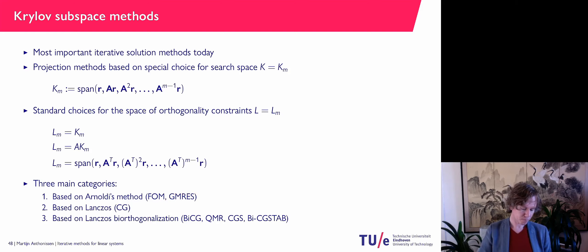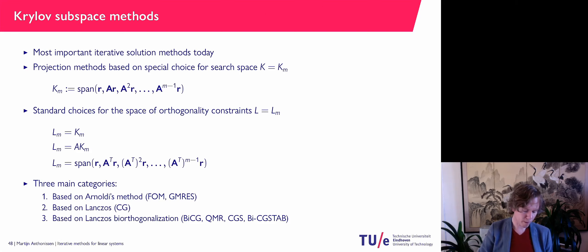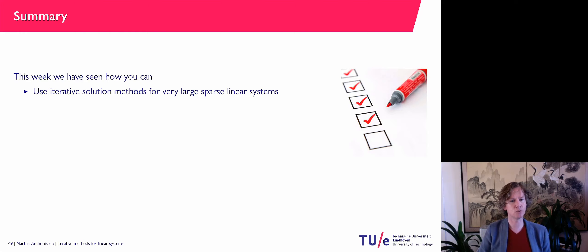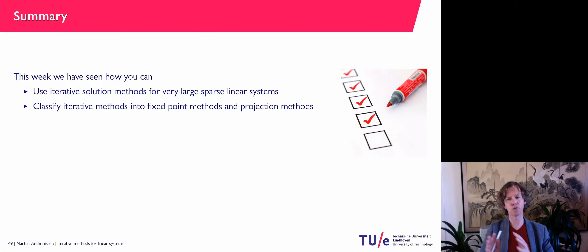Bi-CGSTAB was proposed by the famous Dutch numerical mathematician Henk van der Vorst. To wrap up our discussion about iterative methods: we have seen that iterative solution methods are used for very large sparse linear systems, the main reason being that LU factorization causes fill-in — even if the original matrix has many zeros, L and U may not. We can classify them into fixed-point methods (Jacobi, Gauss-Seidel, SOR) and projection methods.